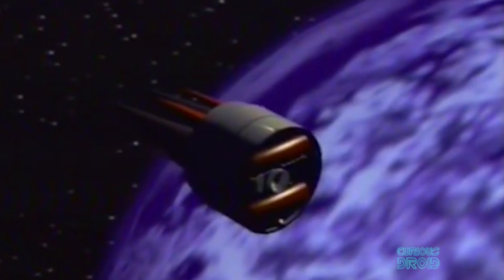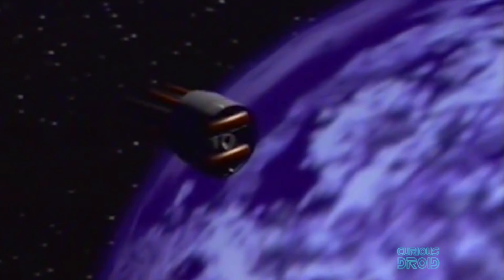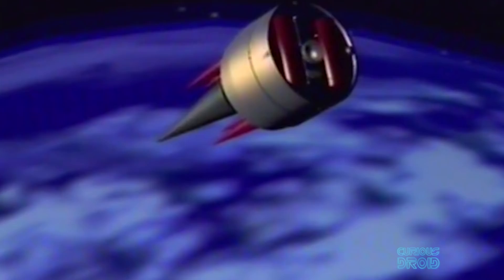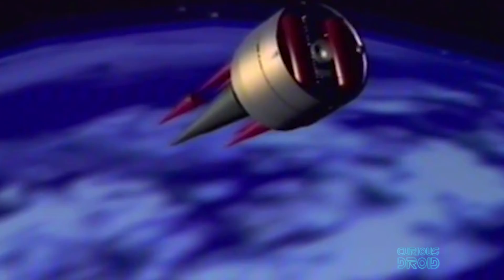Many ICBMs can hold more than one warhead. International treaties limit it to 10, yes 10 separately targeted warheads, but that's not all. To confuse the defenders' detection and tracking systems, the missile will also carry decoys, mylar balloons which will inflate when the warheads detach. These float along with the missile debris and the warheads and often are shaped and painted to look like warheads.